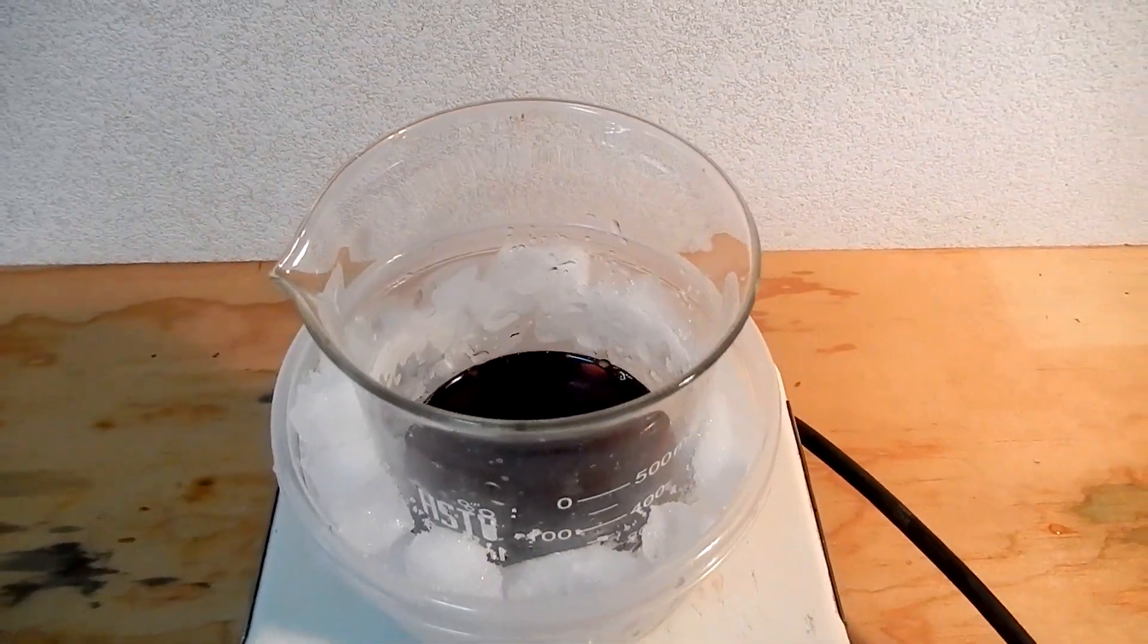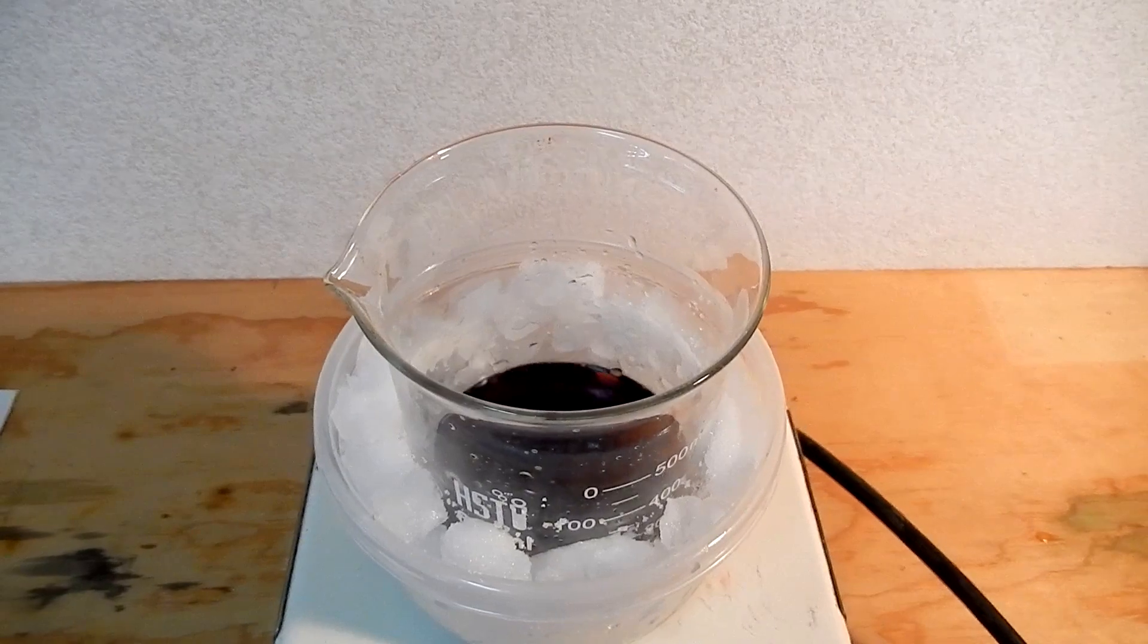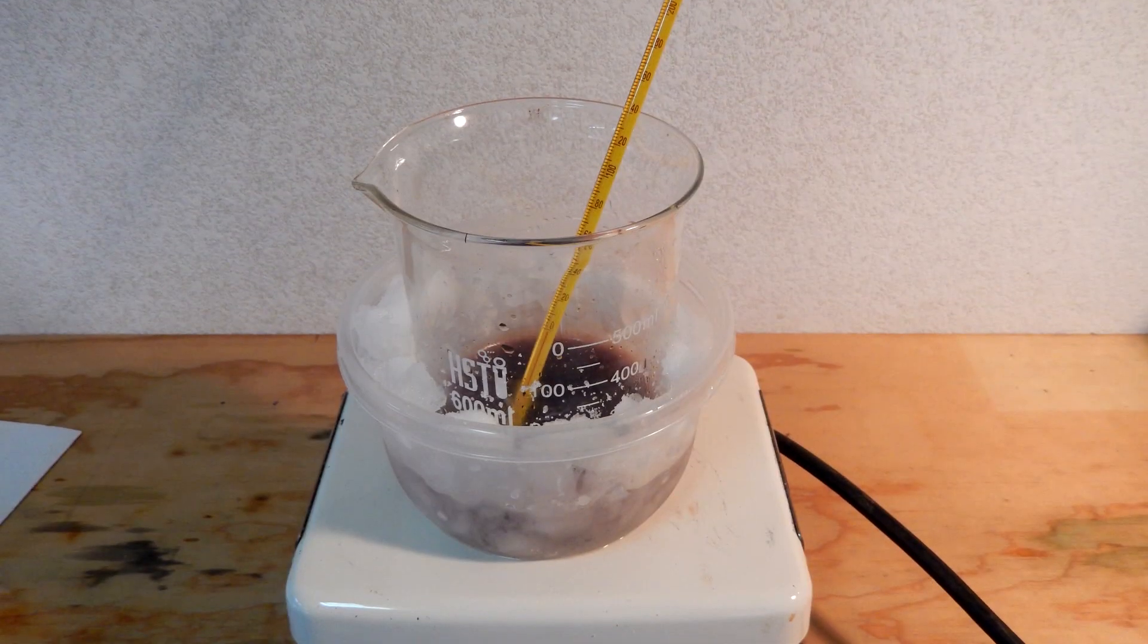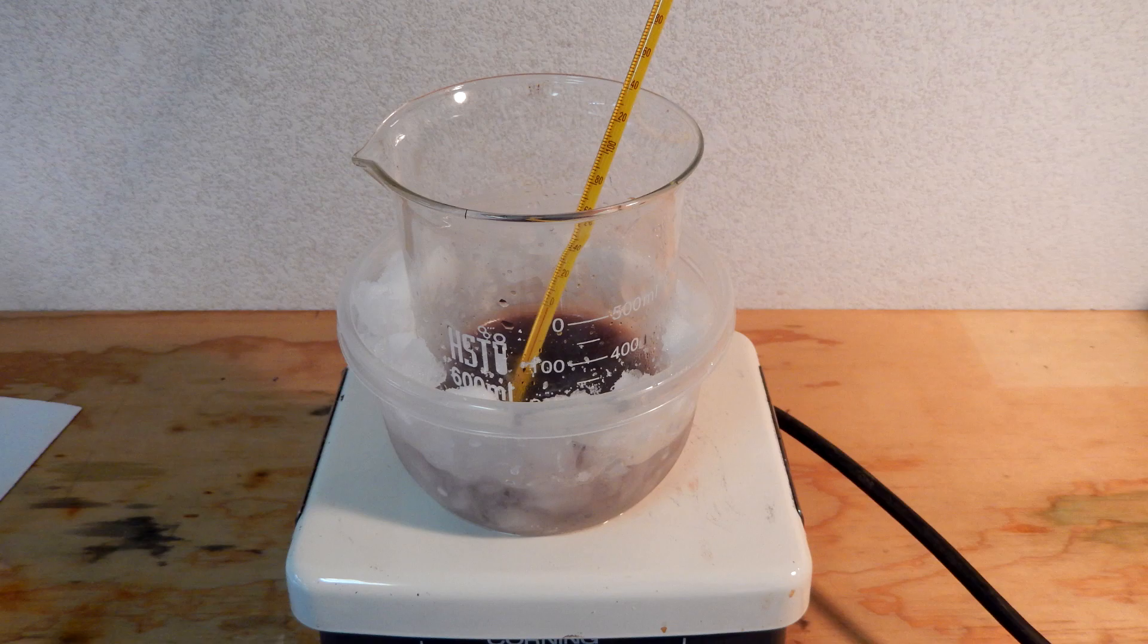Once the fumes subside, place the beaker in a salt ice bath and wait for the temperature to drop to 0 degrees Celsius or below. A white precipitate of aniline hydrochloride is observed at this low temperature.